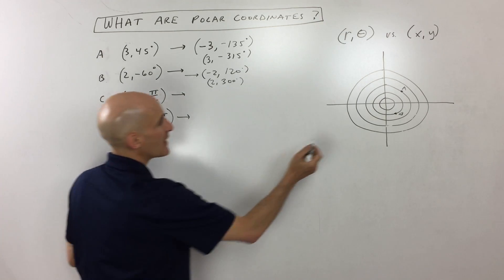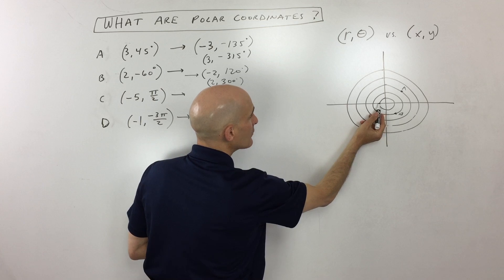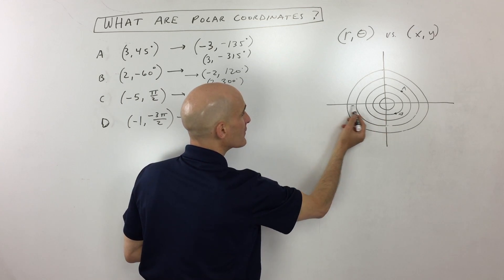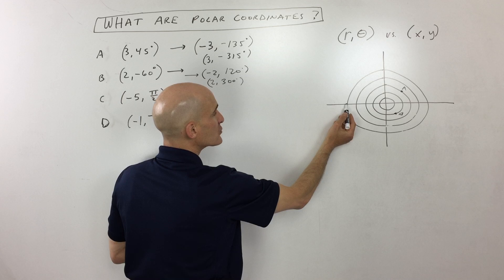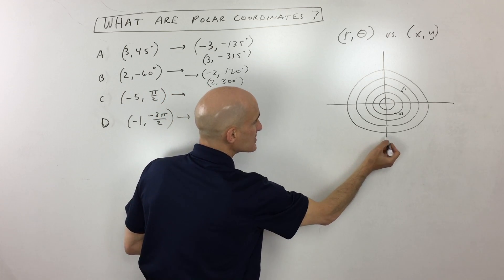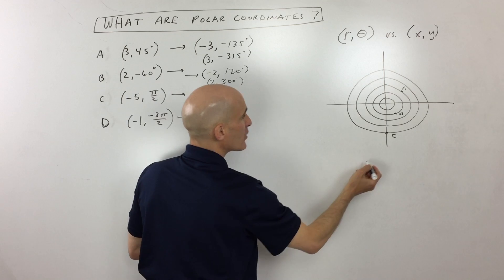But let's get into these last two examples. (-5, π/2). So negative 5 means I'm going to go to circle 5: 1, 2, 3, 4, 5. I'm going to the left because it's negative. π/2, that's a positive angle, which means I'm going counterclockwise. And I'm going to end up right there. That's point C.